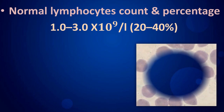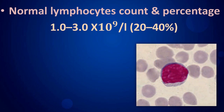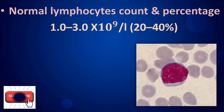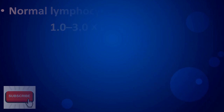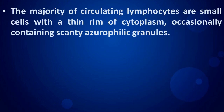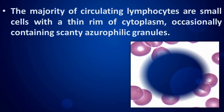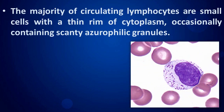Normal lymphocyte count and percentage: 1 to 3 multiply 10 to the power 9 per liter, and 20 to 40 percent. The majority of circulating lymphocytes are small cells with a thin rim of cytoplasm, occasionally containing scanty azurophilic granules.